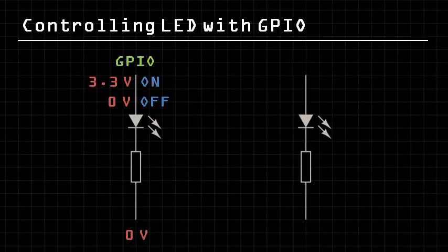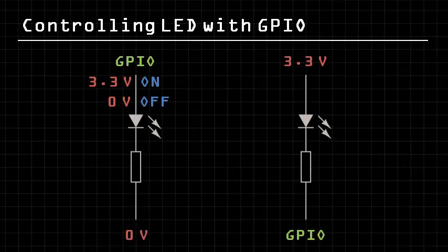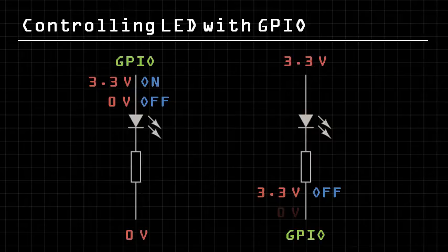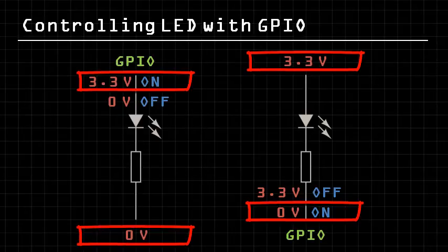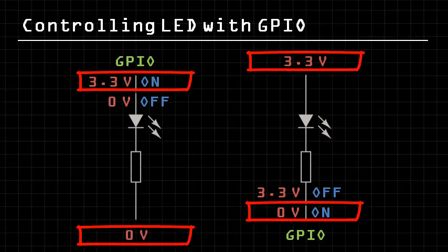But we could also use the 3.3V rail with a GPIO pin in this way. When the GPIO pin is at 3.3V, there is no potential difference, so the LED is off. But when the GPIO pin is set to 0V, there is a potential difference of 3.3V and the LED lights. Notice that the two on cases are essentially the same, with 3.3V at the top and 0V at the bottom.